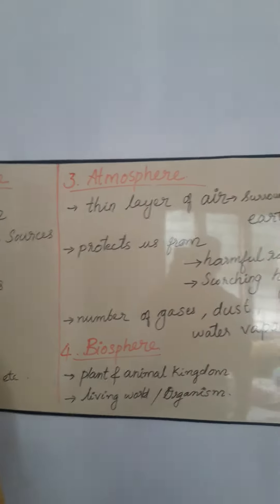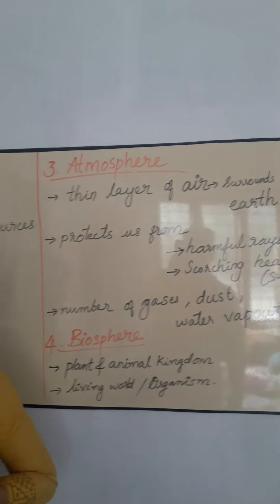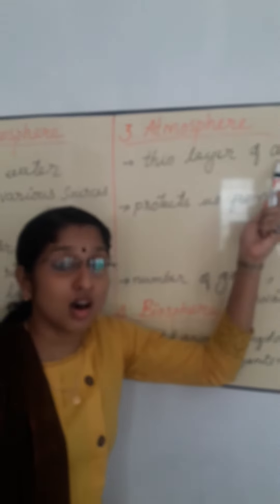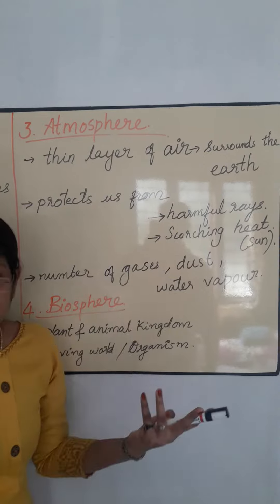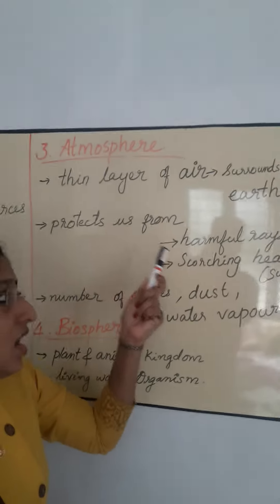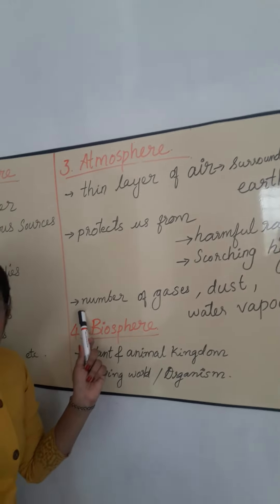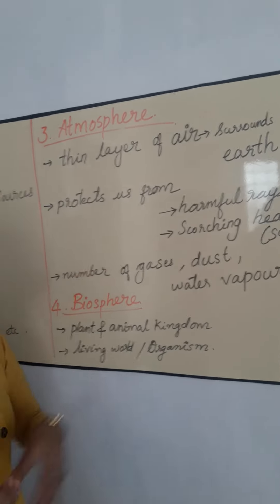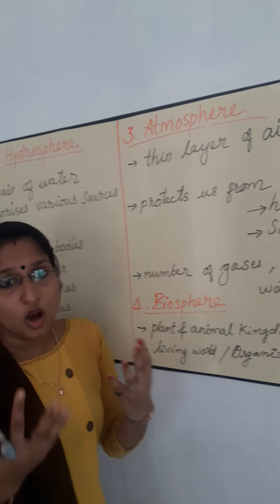Next, atmosphere. Atmosphere is a thin layer of air which is surrounded with our earth. It protects us from harmful rays and scorching heat of the sun. It consists of a number of gases, dust and water vapour.